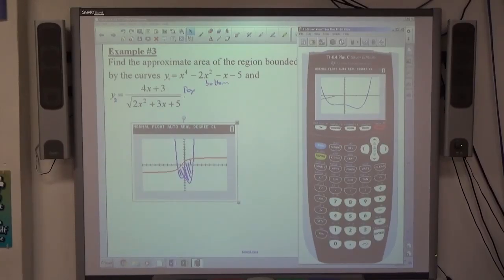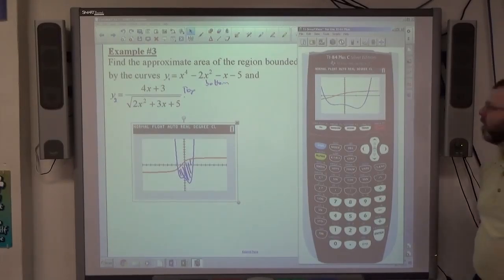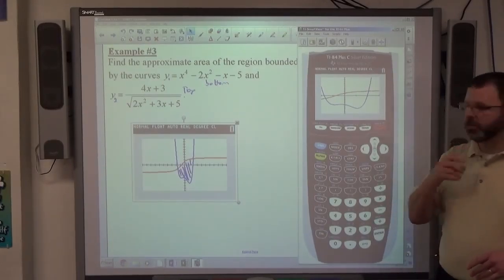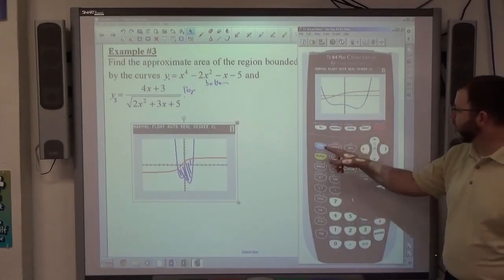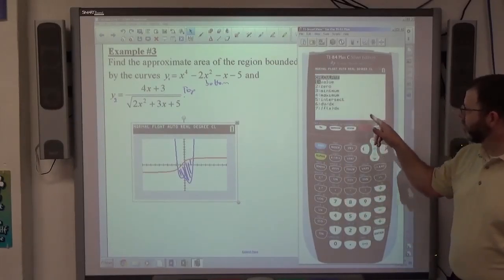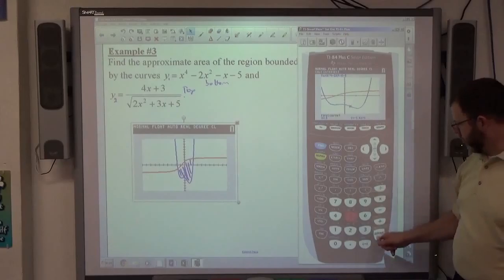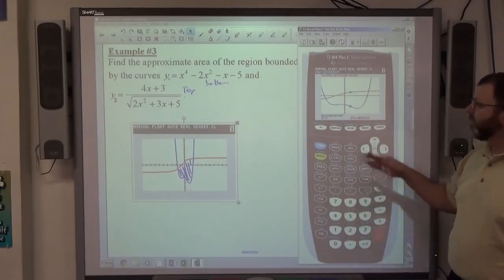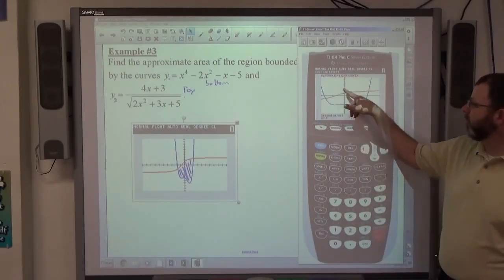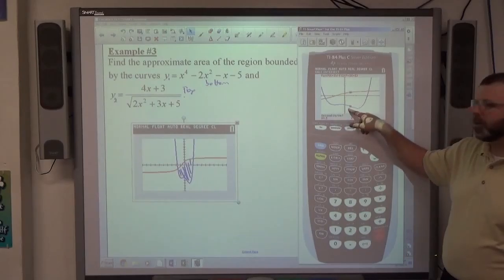So maybe I'm negative one-point six and positive two-point one maybe. I don't know. But again, my calculator can evaluate those down to as many decimal places as I want. So second calc intersect. Again, all I'm doing with the first two enters is picking curves. It doesn't matter where I'm sitting. So first curve is y1, second curve y2. If at this point you haven't figured out top and bottom, you can very clearly see the top is this one, the bottom is that one.